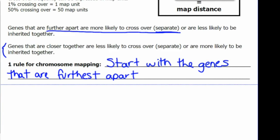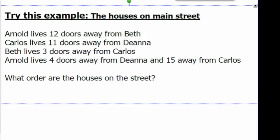Let's look at the analogy of the houses on Main Street. Arnold lives 12 doors away from Beth. Carlos lives 11 doors away from Deanna. Beth lives 3 doors away from Carlos. Arnold lives 4 doors away from Deanna and 15 away from Carlos.